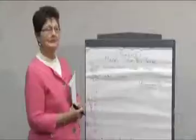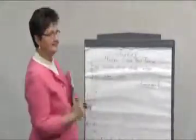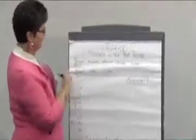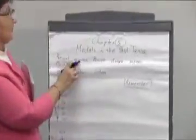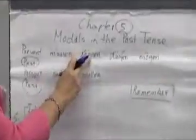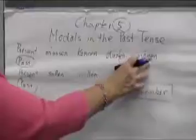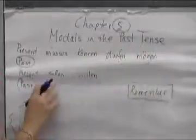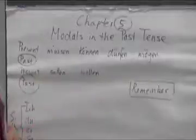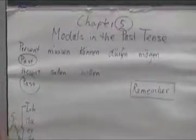Chapter five. Today we are going to talk about modals in the past tense. I wrote out all the modals we have learned so far in the present tense. Remember they were: müssen (to have to), können (to be able to), dürfen (to be allowed to), mögen (to like), sollen (to be supposed to), and wollen (to want). Now let's see what happens when we change them to the past tense.